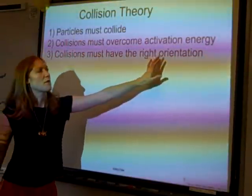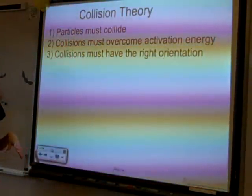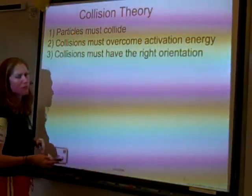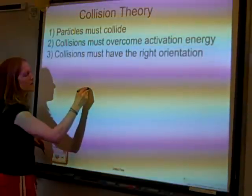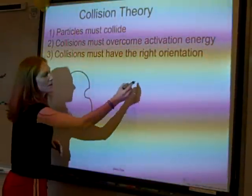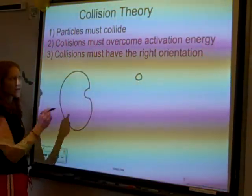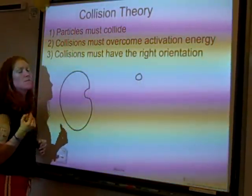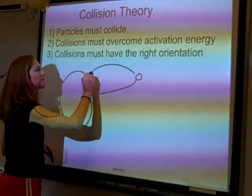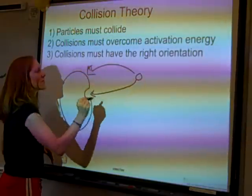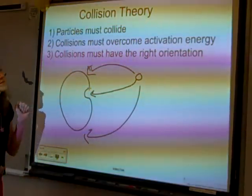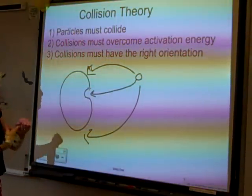The third part of collision theory is that collisions have to have the right orientation — they have to collide in a way that allows them to react. This matters more with large molecules where only one part is reactive. If this large molecule is only reactive in one specific spot, the only collision that would result in a reaction is if the smaller particle hits exactly that spot. Colliding anywhere else would not result in a reaction. So they have to collide, collide hard enough, and have the right orientation.